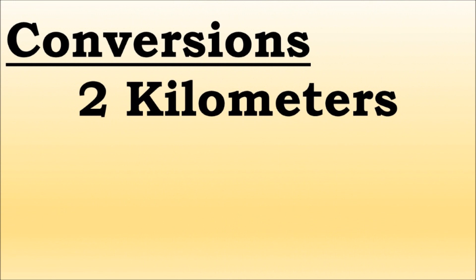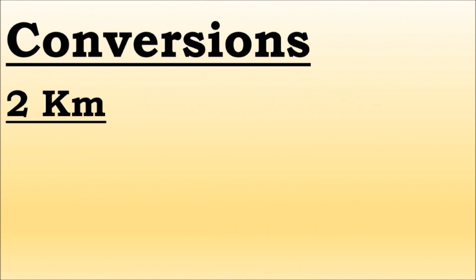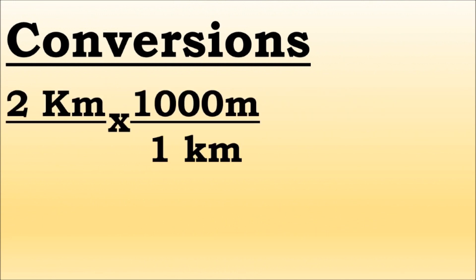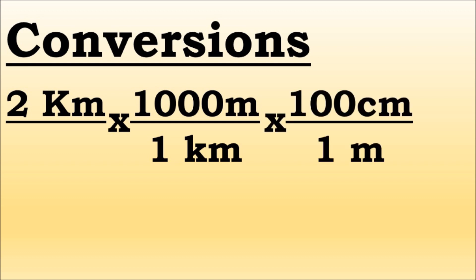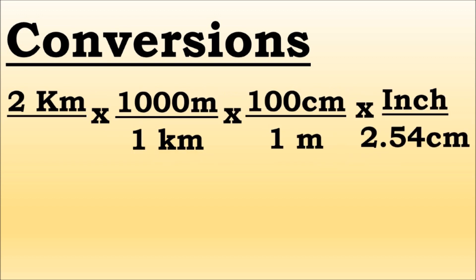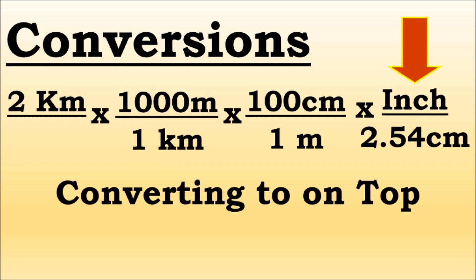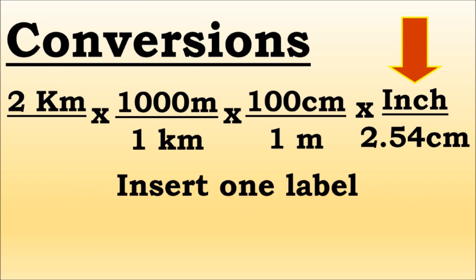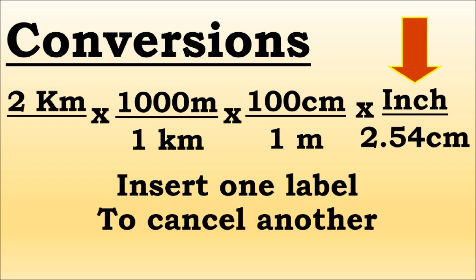Now, let's work through our example. Begin with 2 kilometers. Plug in the first conversion factor, which is 1,000 meters over 1 kilometer times 100 centimeters over 1 meter times 1 inch over 2.54 centimeters. What you are converting to is on top, which are inches. The plan is to insert one label to cancel out another label.